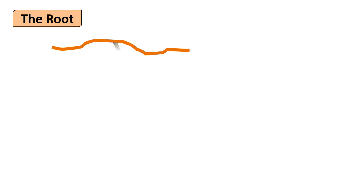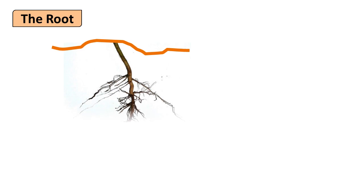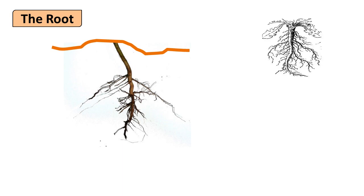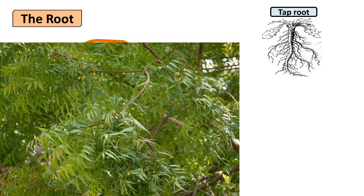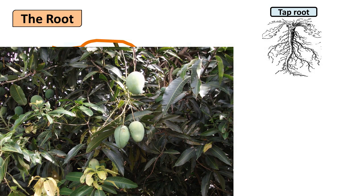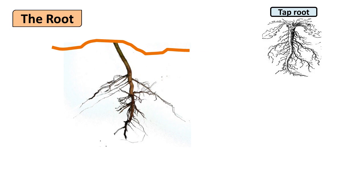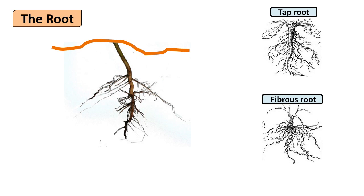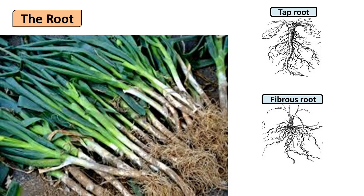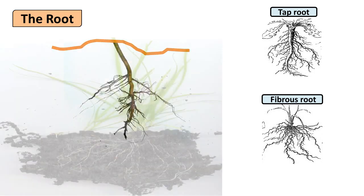The root is the part of the plant that grows below the ground surface. If you observe roots of plants, you will find that some plants have roots known as taproot. Plants like banyan, neem, mango, etc. have taproot. Some plants have fibrous roots — for example, onion, grass, etc.